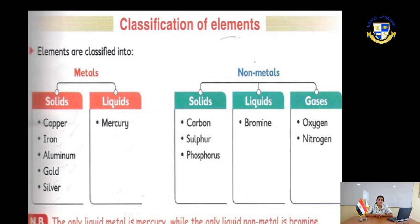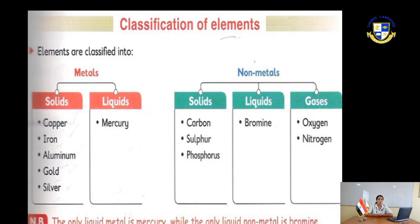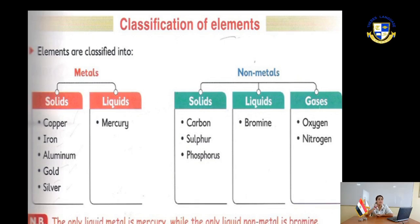Elements can be classified into metals and non-metals. All metals are solid — like copper, aluminum, gold, and silver — except only one: mercury, the only liquid metal.